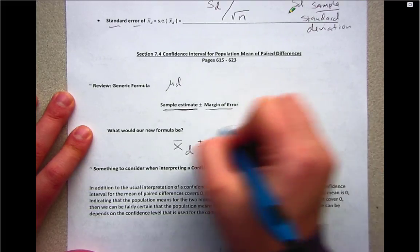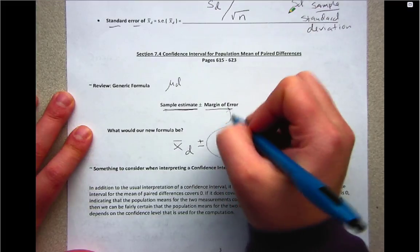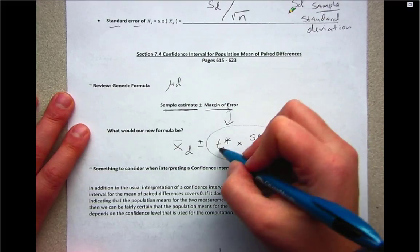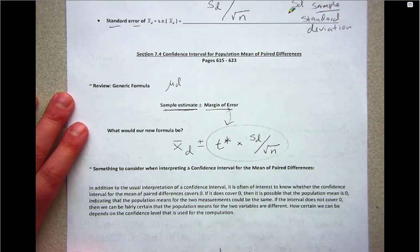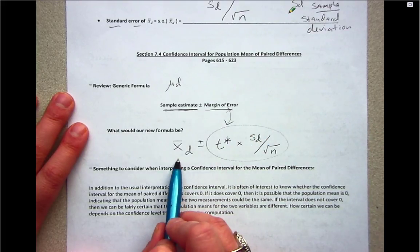This product will be our margin of error. Remember, we use a T star multiplier because we have added estimation - X bar sub d and s sub d.